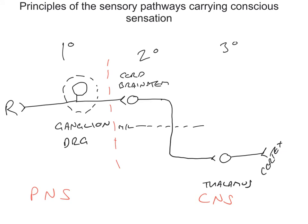Let's quickly recap what we've covered. We've talked about a sensory receptor out in the body wall — the body wall could be the skin or, for example, the mouth mucosa. It could be a receptor for cold or pain, something like that. Information from the receptor is sent along the axon of our first order neuron, whose cell body is in the dorsal root ganglion typically. This first order neuron crosses over from the peripheral nervous system into the central nervous system, where it synapses upon a second order neuron.